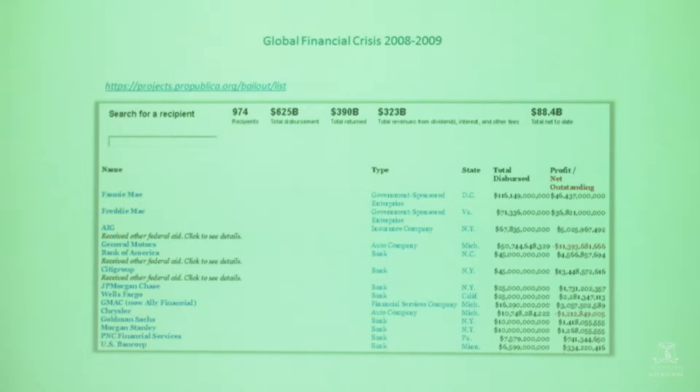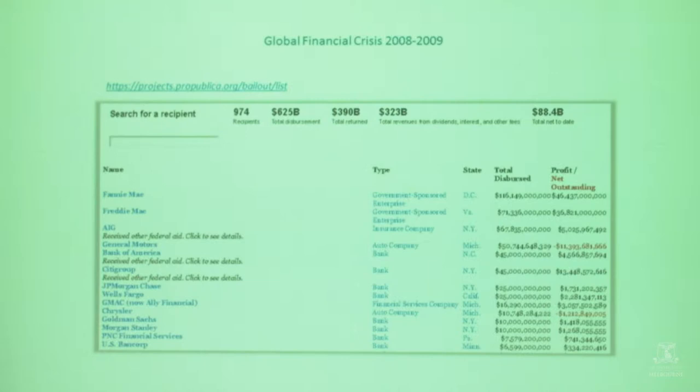The people who experienced the crisis bore the consequences, but so will the future generation. During the crisis, the US government had to bail out nearly a thousand major institutions, including Fannie Mae, Freddie Mac, AIG, General Motors, Bank of America, Citigroup, JP Morgan, and Wells Fargo. This bailout cost the US taxpayer nearly $700 billion. The government had to borrow to bail these institutions out — and who's going to pay for it? Future generations. Once you start earning income and paying tax, you're going to pay for this. The consequences of the crisis are intergenerational.